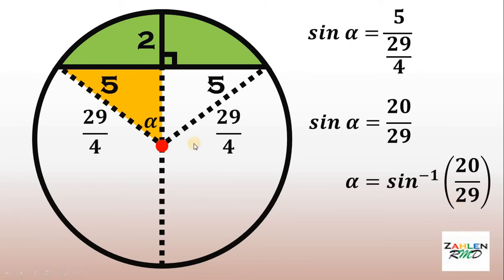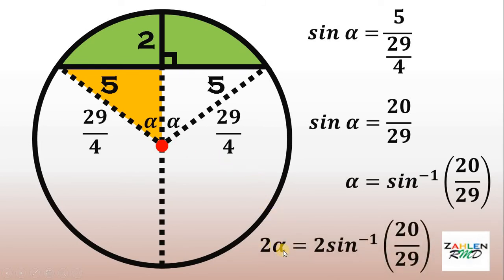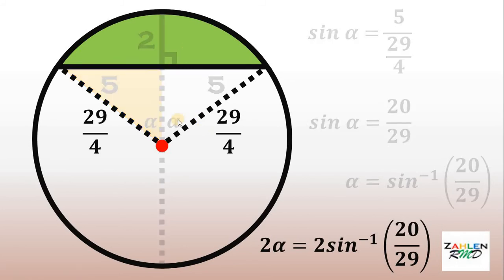By symmetry, the angle on the other side is also alpha. It follows that the measure of 2 alpha equals 2 times arcsin(20/29). This angle is very important to find the area of the green region, because we need this angle and the length of the radius of this circle.